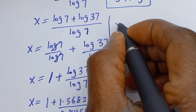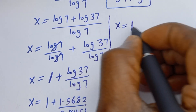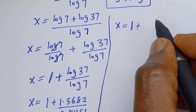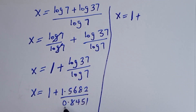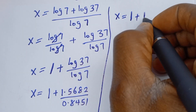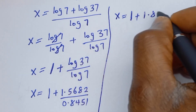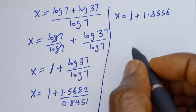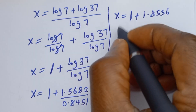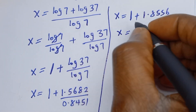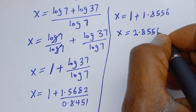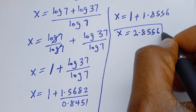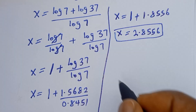Then s will be equal to 1 plus log 37, which is 1.5682, divided by log 7, which is 0.8451. This gives 1 plus 1.8556, so s is equal to 2.8556, and this is the final answer.